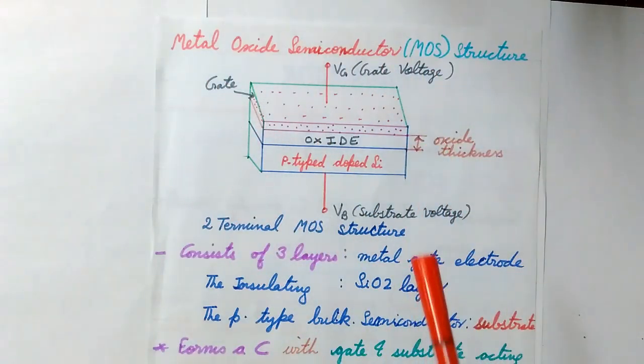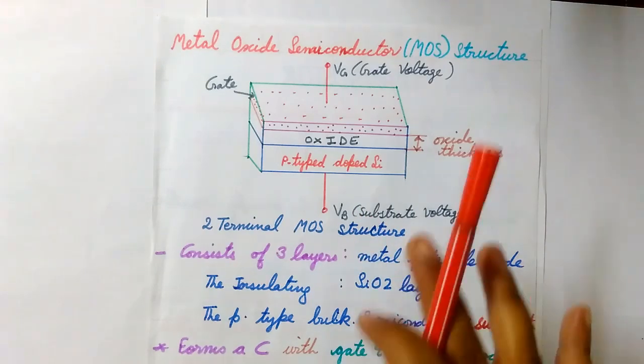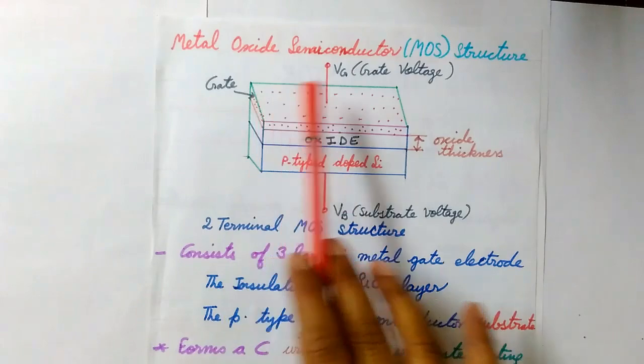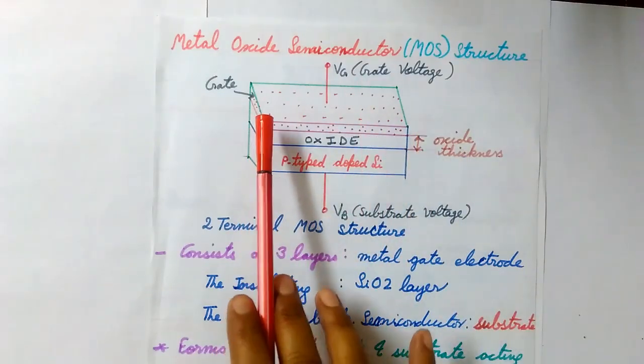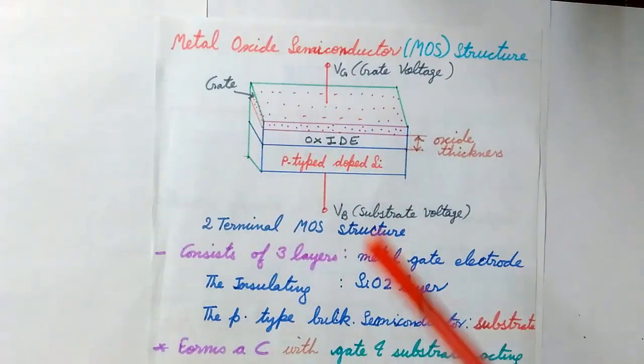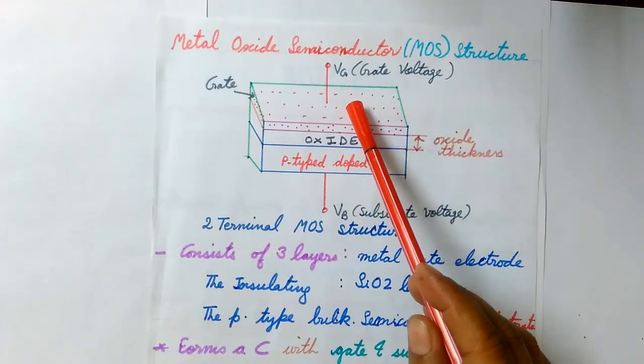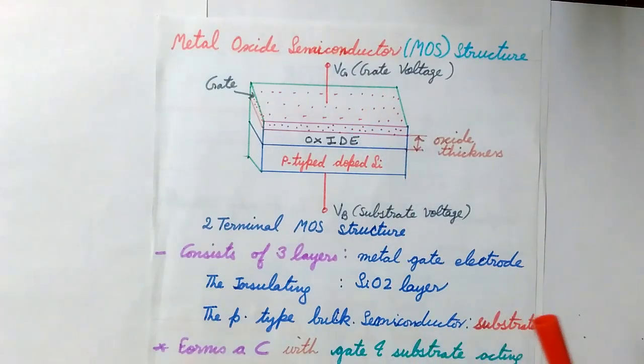What we are talking about is the MOS stack at the gate and just below the gate. So here as we can see in the diagram, we have three layers. The topmost layer is the gate, which is the metal gate or it can be the polysilicon gate.